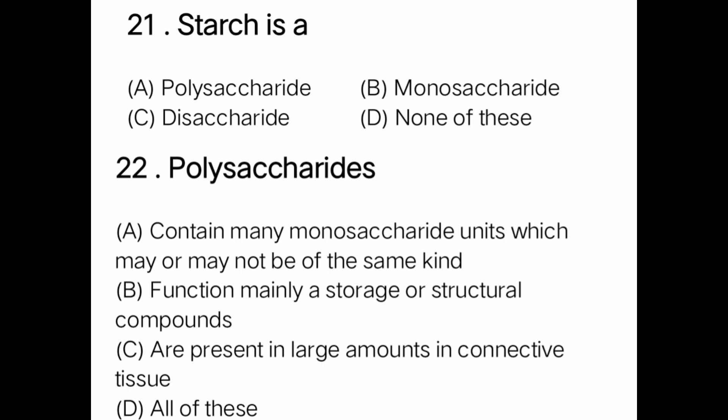Question: Starch is option A a polysaccharide, option B a monosaccharide, option C a disaccharide, option D none of the above. Correct answer is option A: starch is a polysaccharide.